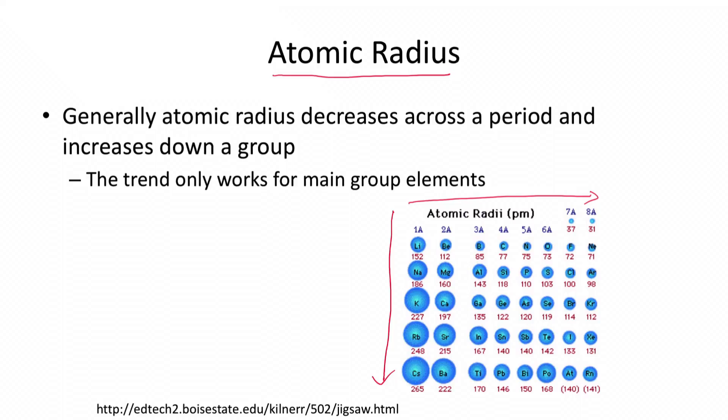As we saw earlier, this trend only seems to work for main group elements — things that are in the A block: the alkali metals, alkaline earth metals, and all the things on the right-hand side, but not necessarily the transition metals. It doesn't work so well for the B part of the periodic table.